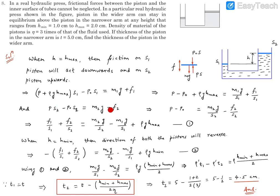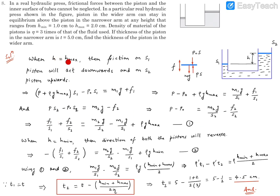Using these two equations, we can subtract or combine them. Substituting the expression for P − P₀ from the S2 equation into the S1 equation and collecting friction terms together, we get: F1/S1 + F2/S2 = M2G/S2 − M1G/S1 + ρgH_max. This is the relation for the case when H is maximum, with F1 and F2 at their limiting values.